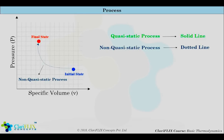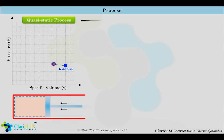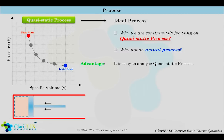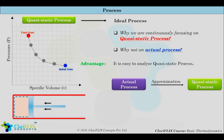Quasi-static process is the ideal process. The reason we continuously focus on quasi-static processes rather than actual processes: first, these are ideal processes and easy to analyze; second, work-producing devices deliver the most work when they operate on a quasi-static process, and work-consuming devices consume the least work when operating on a quasi-static process. That is why we model actual processes into quasi-static processes by assuming certain approximations.